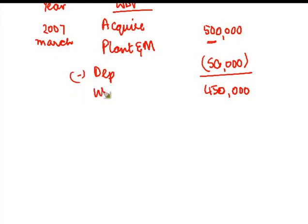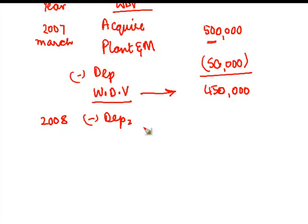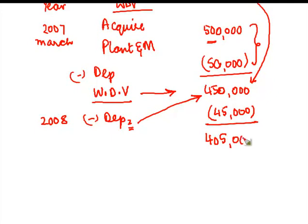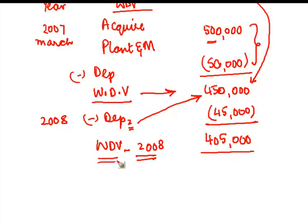When I reduce this 50,000, I get 4 lakh 50,000 as the value. This value is known as WDV or written down value. Next year, which is 2008, I have to charge depreciation again. This time I charge depreciation on the value which remains after charging depreciation for earlier years — so 45,000, which is 10% of 4 lakh 50,000. When I reduce this, I am left with 4,05,000 as my WDV at the end of 2008.